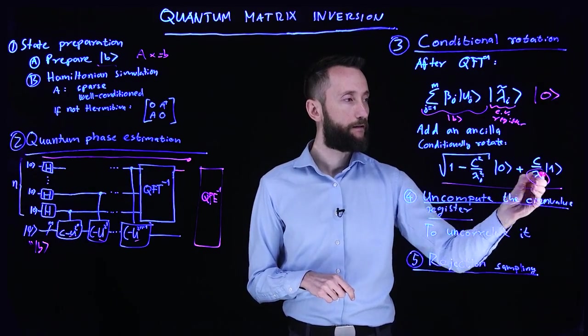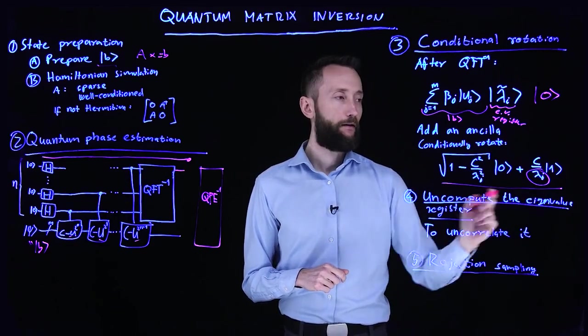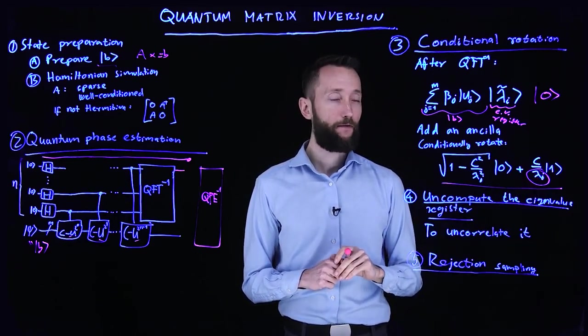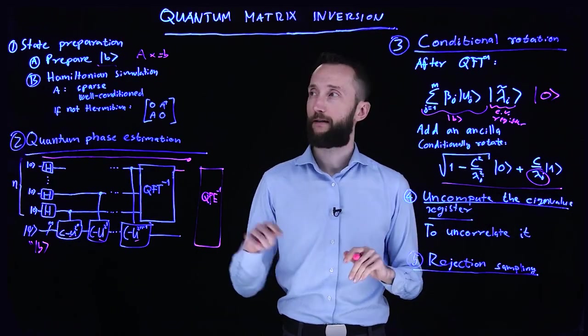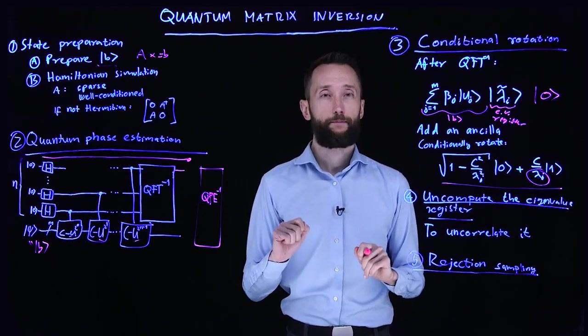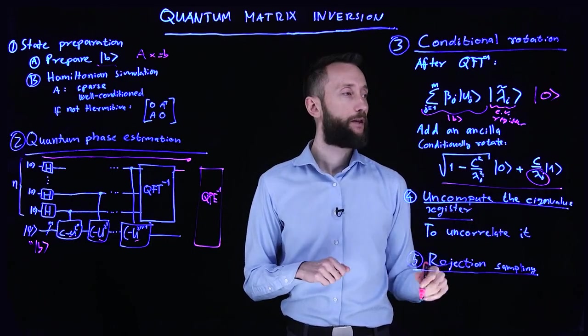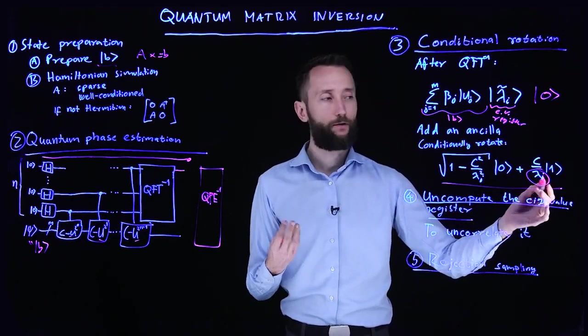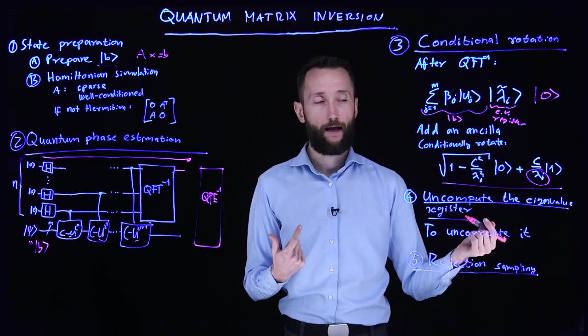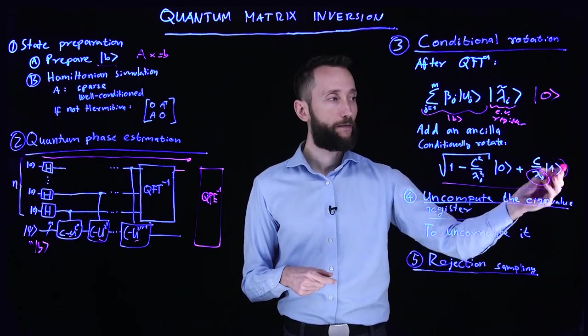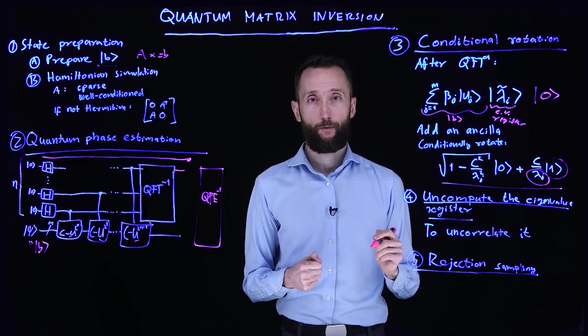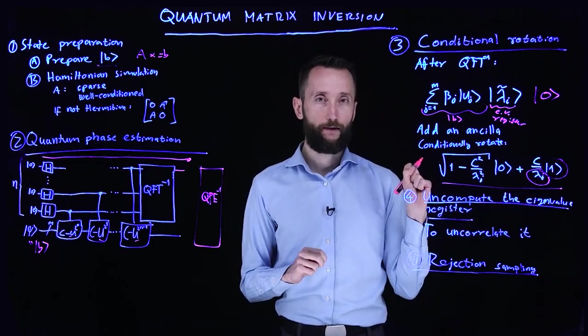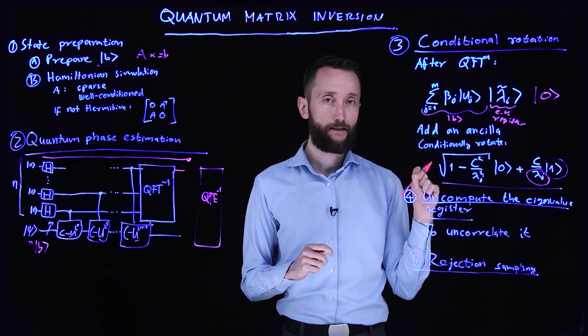And the reason we want to do this is because here the inverse of lambda i appears. And if we have that, then we can start estimating the inverse of the operator with some rejection sampling. So this is also kind of an amplitude encoding. We encoded the information we are interested in, in the amplitude of the excited state of the ancilla qubit.